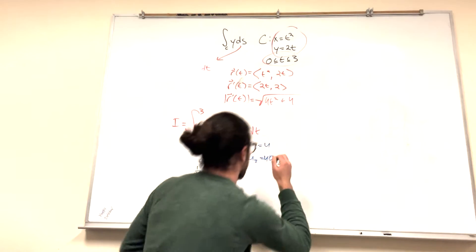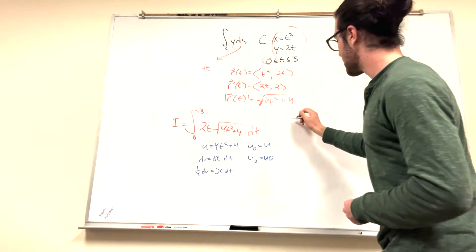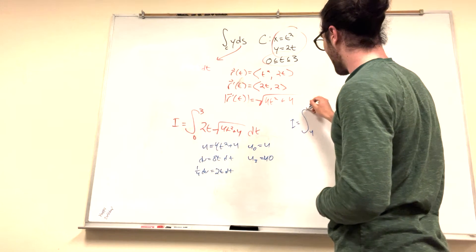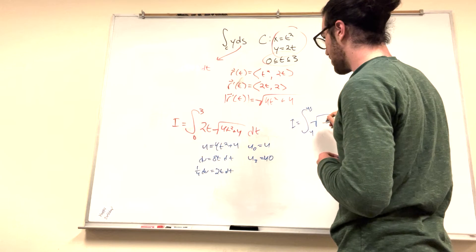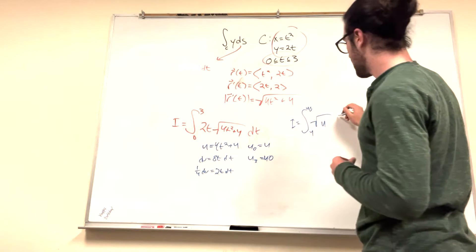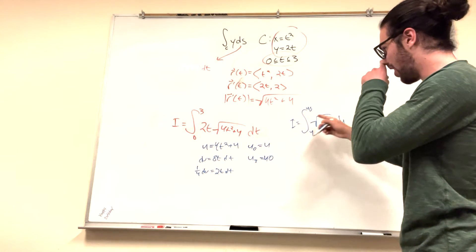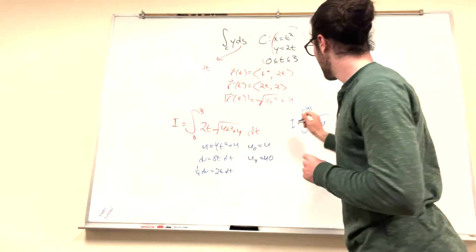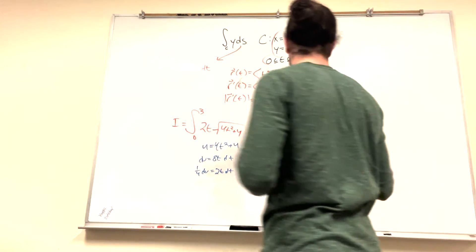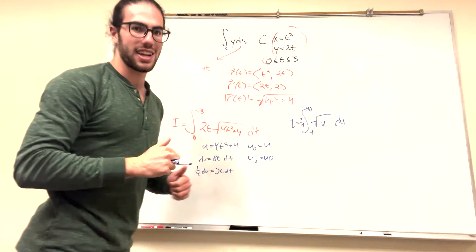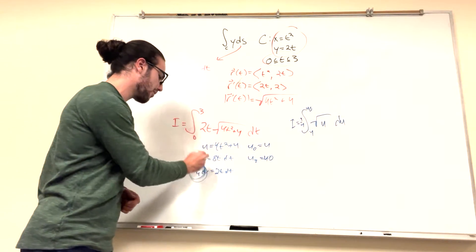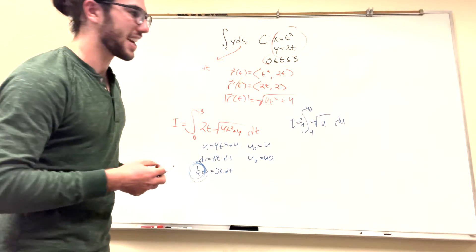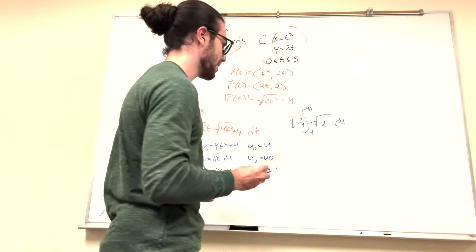So we can rewrite this integral in terms of u as 4 to 40 square root of u du, right? But we have to not forget about our constant. 1 fourth comes out up front. I forget that all the time. I think you just got to circle it a million times. Be like, don't forget the 1 fourth. That's what I did on the test once and it did work. So maybe do that.